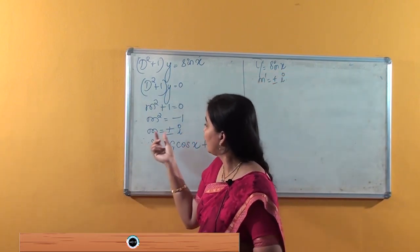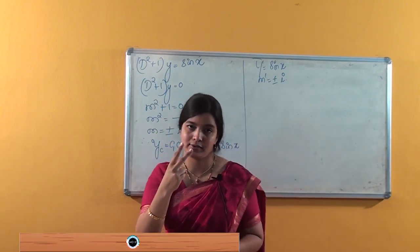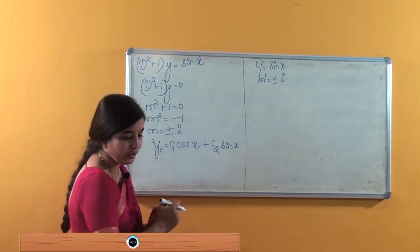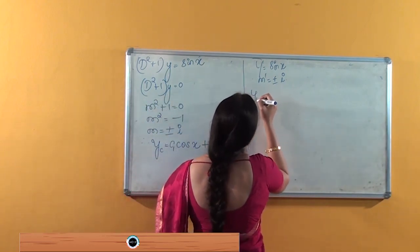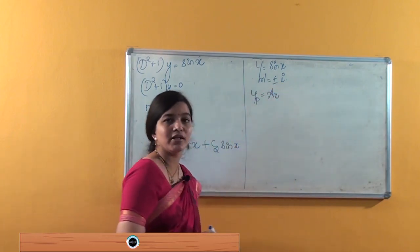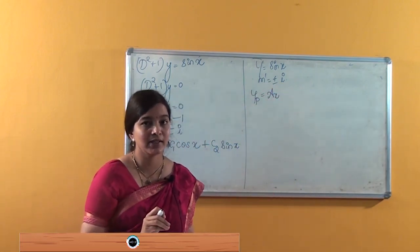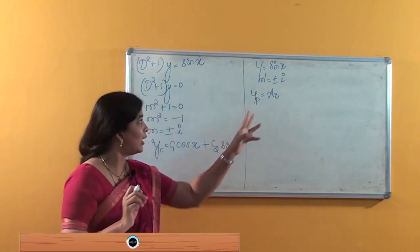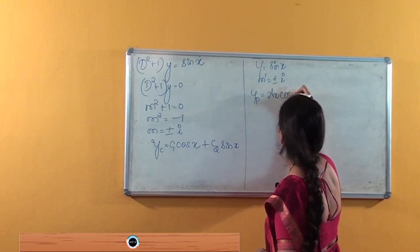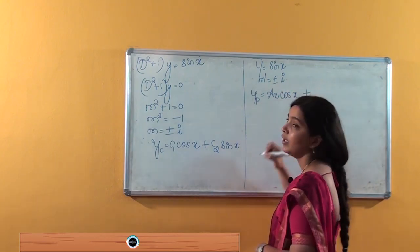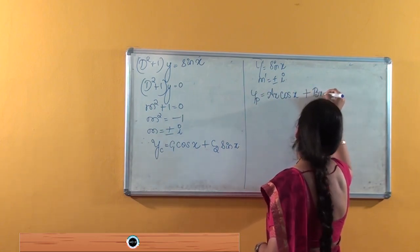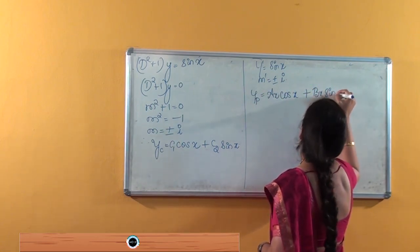Observe that this root m′ = ±i is repeated — it appears in both the complementary and particular sides. When a root is repeated, we write the particular solution as: yp = Ax cos x + Bx sin x, multiplying by x to account for the repetition.